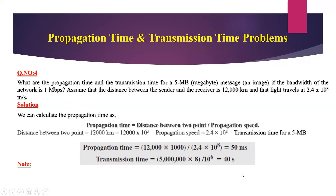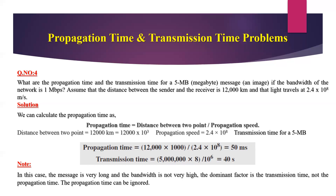The propagation time is 50 milliseconds, but the transmission time is 40 seconds. So the dominant factor is obviously the transmission time, not the propagation time — the propagation time can be ignored. In this case, the message is very long and the bandwidth is not very high. The dominant factor is transmission time, not propagation time. I hope you understand this problem. Thank you.